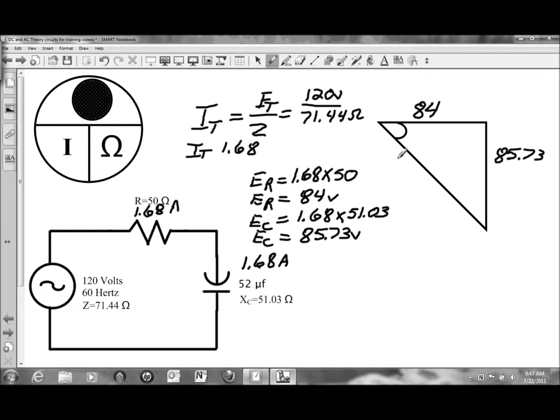And the source voltage of 120 volts, we can verify it. E total will be equal to the square root of ER squared plus EC squared.